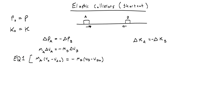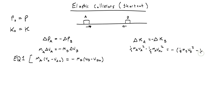Now let's look at the kinetic energies. If I look at the increase of kinetic energy in A being equal to the decrease in kinetic energy of B, then what I get is one-half MA times VA squared minus MA times VA naught squared equals negative one-half MB times VB squared minus one-half MB times VB naught squared. When I distribute the negative, this term becomes negative and that one becomes positive.